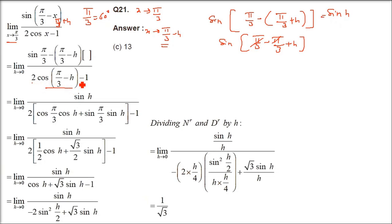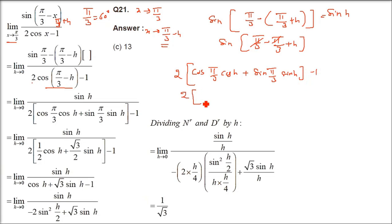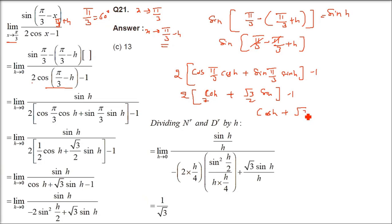Coming to the denominator: we open 2 cos(π/3 minus h) using the cos(a minus b) formula — that is cos a cos b plus sin a sin b, where a is π/3 and b is h. So we get 2 times (cos 60° cos h plus sin 60° sin h). cos 60° is 1/2 and sin 60° is √3/2. After multiplying by 2, the denominator becomes cos h plus √3 sin h minus 1.